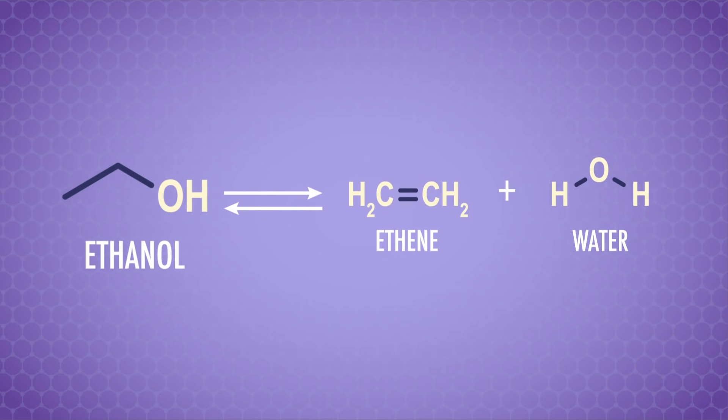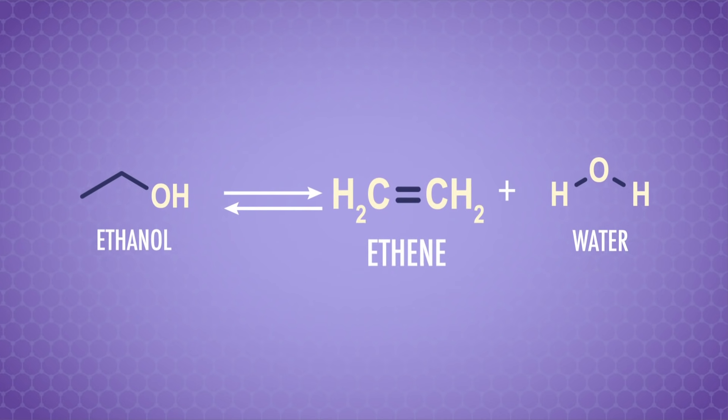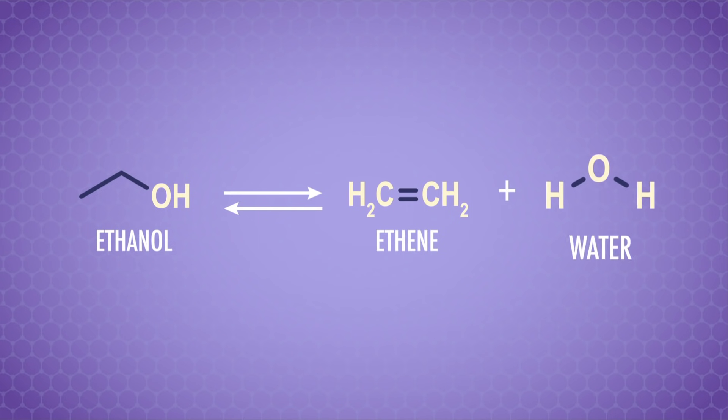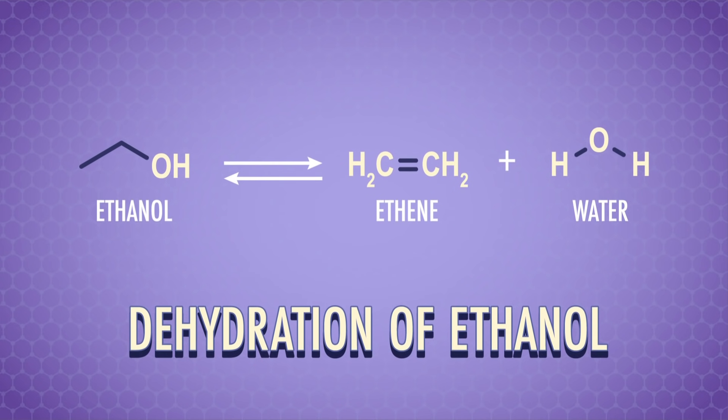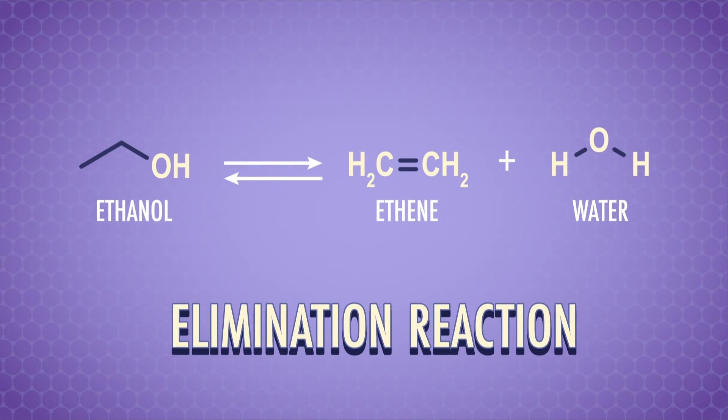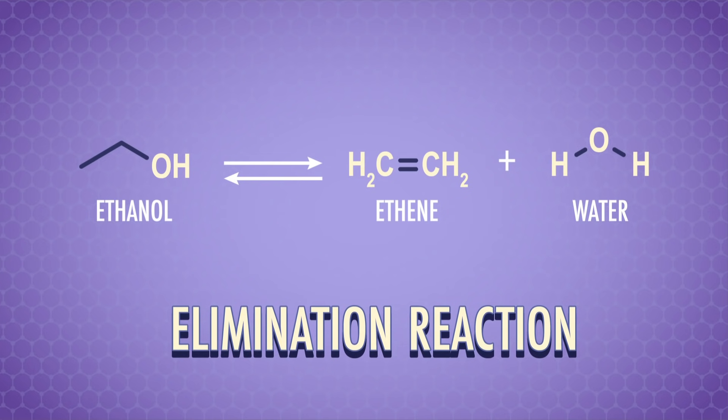So we can also take ethanol and use it to make ethane and some water. This type of reaction is known as the dehydration of ethanol, because we're removing water from the ethanol. But more generically, it's an elimination reaction – a reaction in which a group is kicked out of a larger molecule. Elimination reactions are very important, because they're the main way we can make organic compounds containing double or triple carbon-carbon bonds. So, let's have a look at how they work.